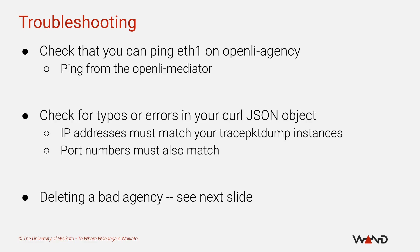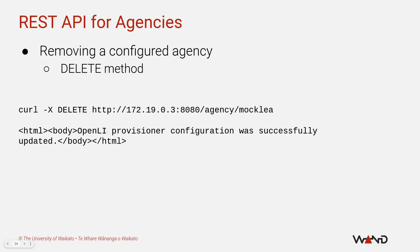If things go wrong and you don't see those success log messages after running your curl command, there are a couple of things to try. First, confirm that you can ping the openli-agency container on its eth1 IP address from the openli-mediator. If the ping fails, the Docker networking for the lab is broken and you may have to rebuild the lab from scratch. If the ping succeeds, the most likely issue is that you've mistyped one of the IP addresses or ports for a handover — either when you ran trace_packet_dump, or more likely when you made the REST API request.